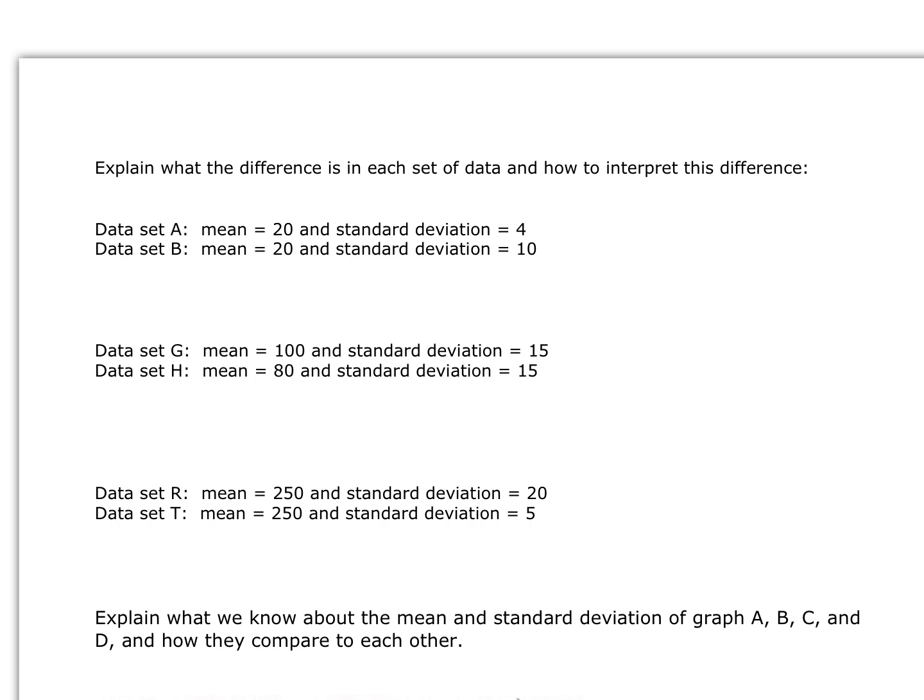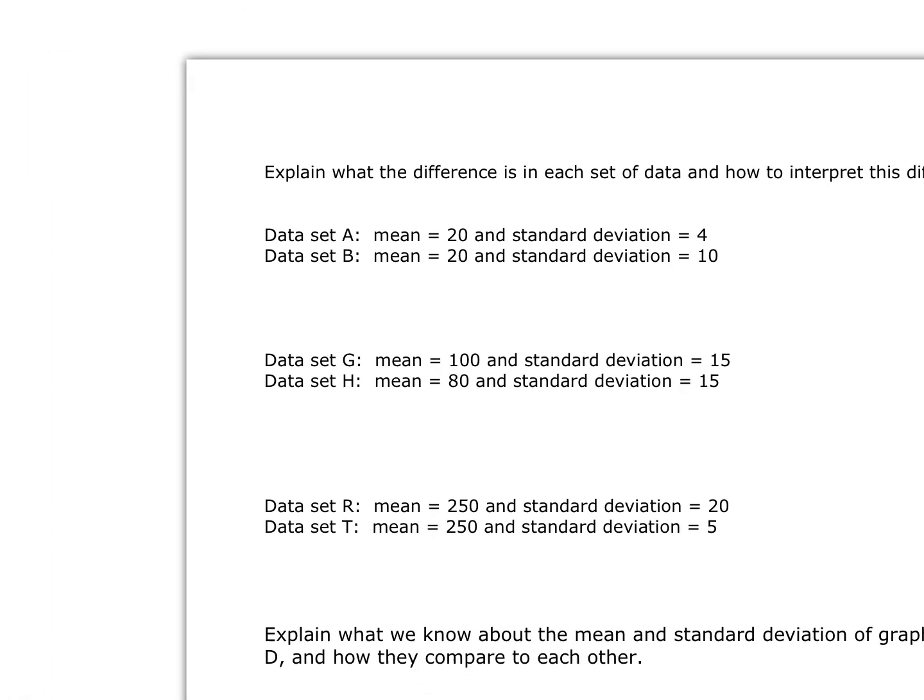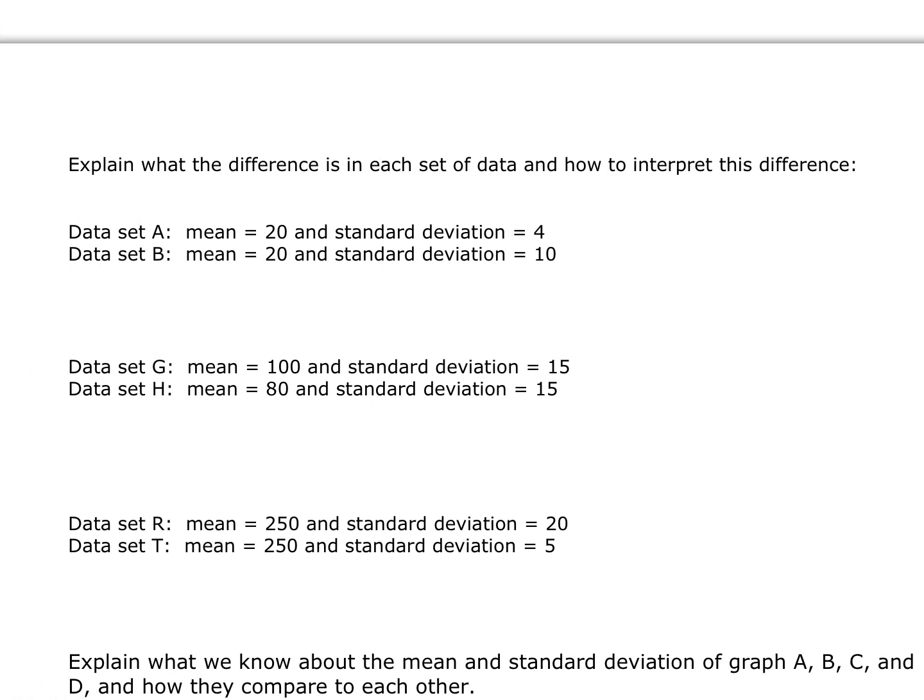Let's talk about what the standard deviation is really telling us about a set of data. It says: explain what the difference is in each set of data and how to interpret this difference. We have two sets of data — set A and set B — and their mean is exactly the same, but the standard deviation is different.